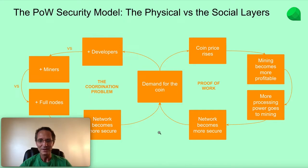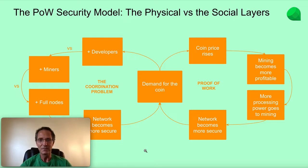As I explained before, Proof-of-Work is the consensus system that protects and provides security to a Proof-of-Work blockchain, using a lot of computing power and electricity to create cryptographic stamps. The general security of a blockchain has these parts and it has two virtuous circles.